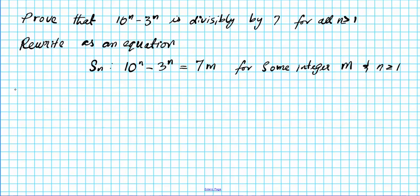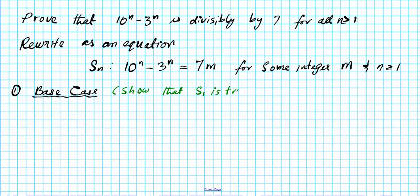Let's start with part 1, which is the base case. For the base case we want to show that S sub 1 is true. Note it's not always 1 — you have to look at the inequality conditions; sometimes it could be n greater than or equal to 5. So don't always start with 1. You must refer to the question to know what your base case starts from. This one is standard — it starts from 1.